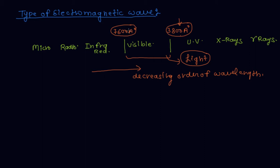In the visible region, seven colors occur: V, I, B, G, Y, O, R. In full form: V represents violet, I represents indigo, B represents blue, G represents green, Y represents yellow, O represents orange, and R represents red.